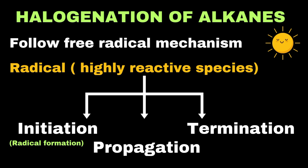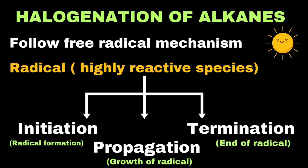During propagation, radicals keep on growing through several reactions and result in the formation of many valuable products. Remember that propagation means the growth of free radicals. In the last step, termination, two radicals react with each other to form a stable product. Termination refers to the ending of radicals.